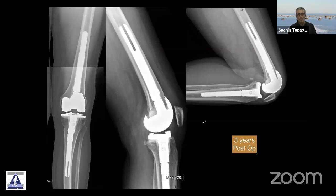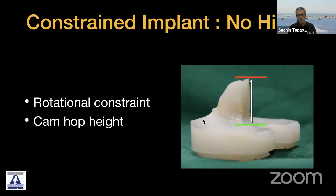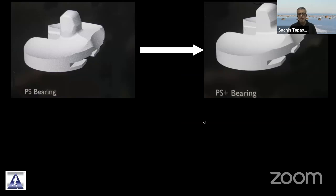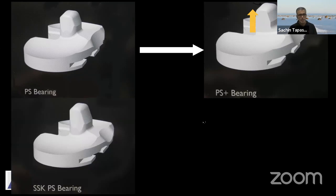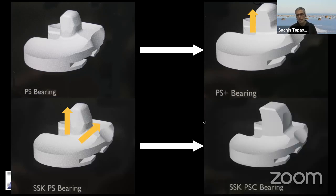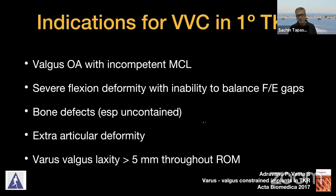Her three-year post-op follow-up is shown. A constrained prosthesis without a hinge will provide rotational constraint. What you need to understand is the cam hop height, which determines the jump height of your prosthesis and makes it completely stable during the arc of flexion-extension. Most systems will allow a continuum of constraint — bearing increases from a standard CR to PS to PS+, to SSK PS with further increased height and width, to a completely varus-valgus constraint which fills up the femoral cam, achieving good stability.